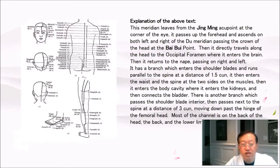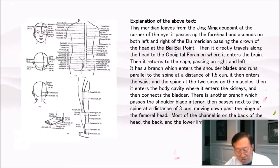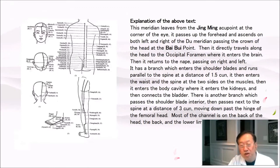Explanation: This meridian leaves from the jingming acupoint at the corner of the eye, passes up the forehead, and ascends on both left and right, passing the crown at the byway point. It travels to the occipital foramen, enters the brain, returns to the nape, and has a branch running parallel to the spine at 1.5 cun. It enters the waist, enters the body cavity, connecting to the kidneys and bladder. Another branch passes the shoulder blade interior, then runs next to the spine at 3 cun, moving down past the hinge of the femoral head. Most of the channel is on the back of the head, the back, and the lower limbs.